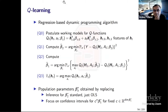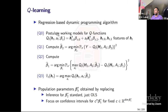For regression-based dynamic programming, we posit working models for the Q function: Q_T(H_T, A_T; beta_T) = H_T0^T * beta_T0 + A_T * H_T1^T * beta_T1. Here H_T0 and H_T1 are fixed feature vectors constructed from H_T — they could include polynomial terms or other basis functions. A_T is just the interaction term. The first term has no treatment, and the optimal treatment according to Q_T is one if H_T1^T * beta_T1 is positive and zero if it's negative.